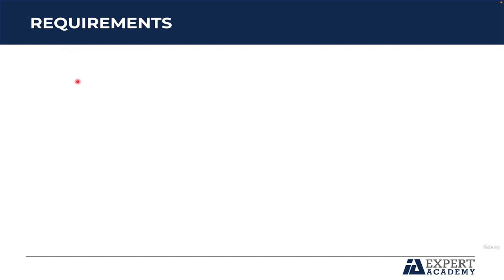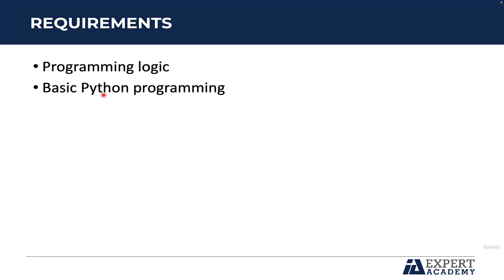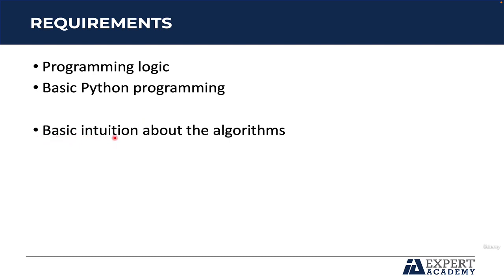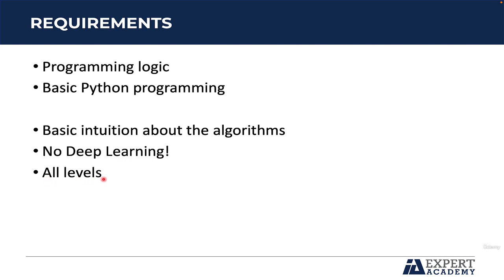Regarding the requirements, you need to know about programming logic and basic Python programming. It is important to emphasize that during this course, you are going to learn only the basic intuition about the algorithms, because the focus is on the practical implementations, and we are not going to use deep learning. The algorithms are all based on background subtraction, which is a simple technique in computer vision; however, you can develop very interesting projects. This course is for all levels — beginners or those who have knowledge about computer vision and want to learn this new technique. Welcome to this course; we hope you enjoy the content and have a lot of ideas on how to implement your own projects.